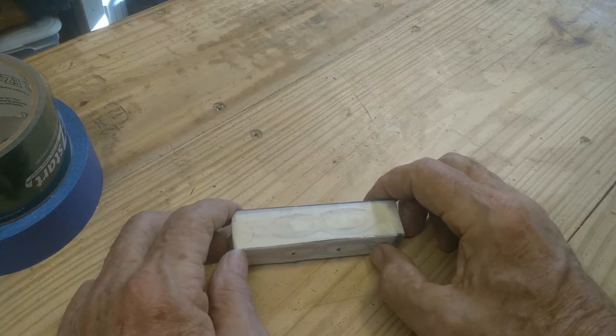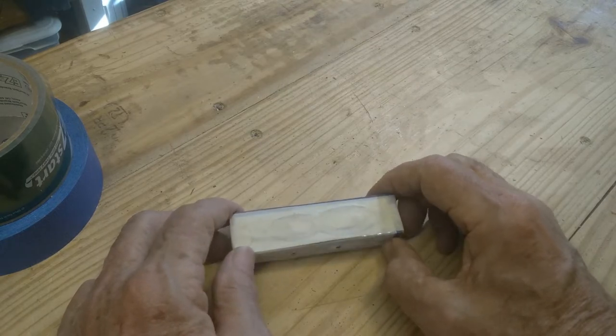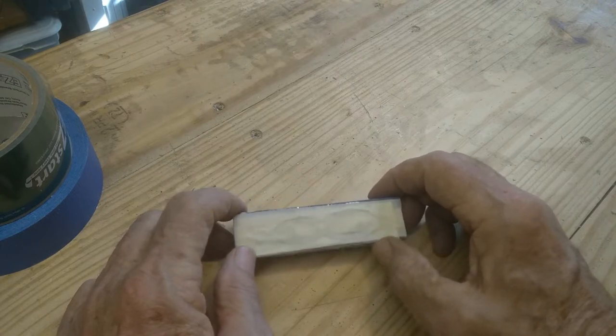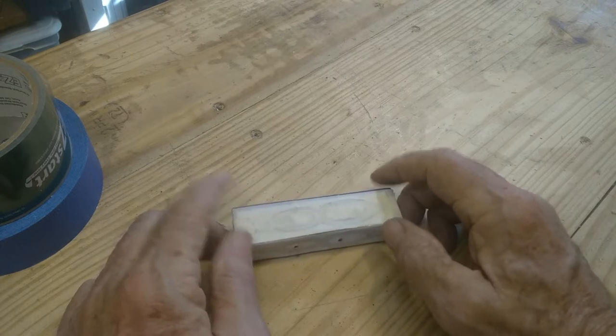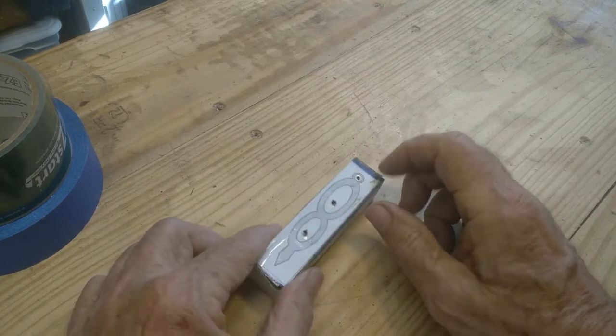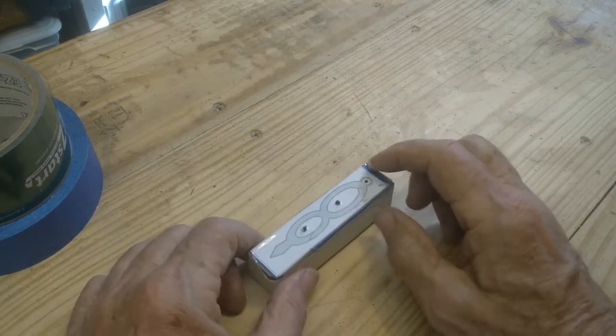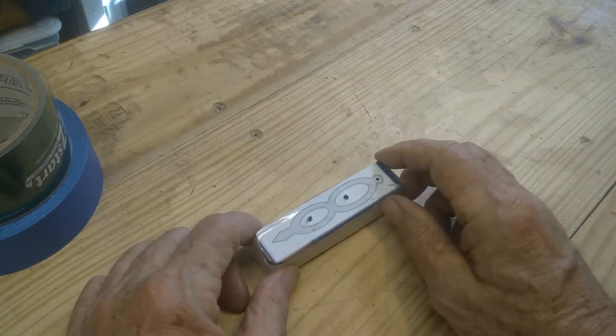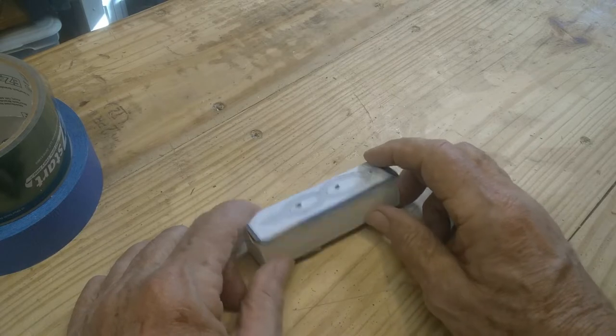It's best not to use a reverse tooth on something like this because it's harder to control, and you don't really need it because the pieces you're cutting are all going to be inside. You're not going to have to worry about the fuzzies on it, but I didn't have any non-reverse tooth.